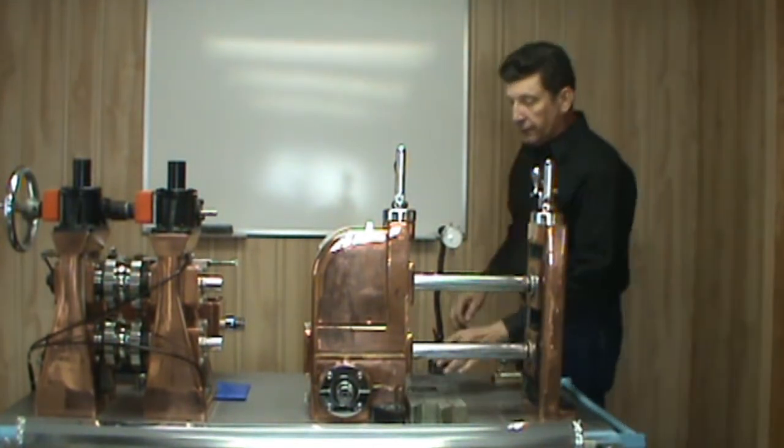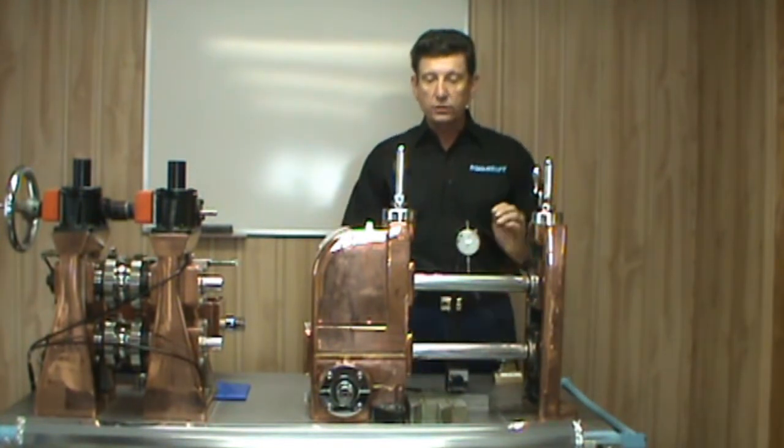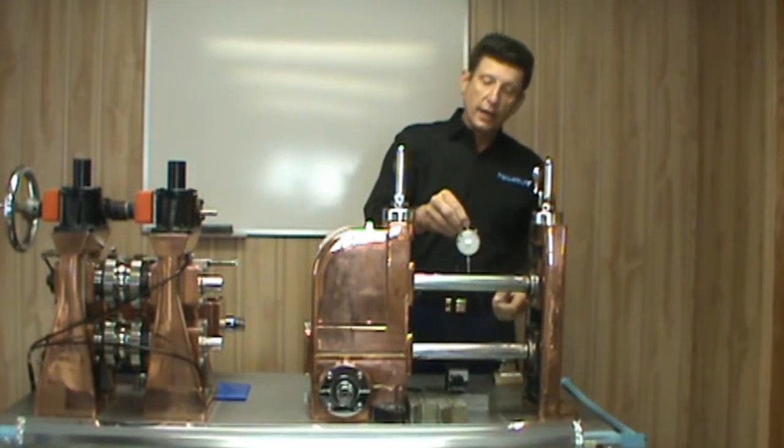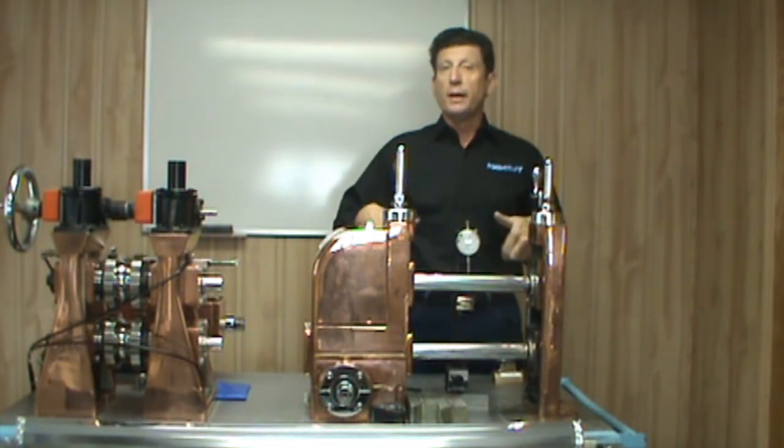Check your shafts for run out. If we have a run out situation, you can take a dial indicator with a magnetic base, jog the mill, raise the indicator up when it comes across the keyway, and check for any bent shafts that we might have.